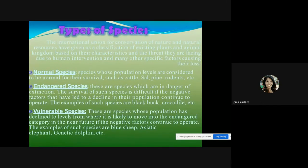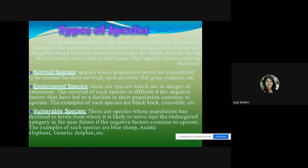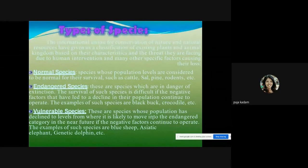Vulnerable species are those whose population has declined to levels from which they are likely to move into the endangered category in the near future, if negative factors continue to operate. Examples of vulnerable species include the blue sheep, Asiatic elephant, and Gangetic dolphin.